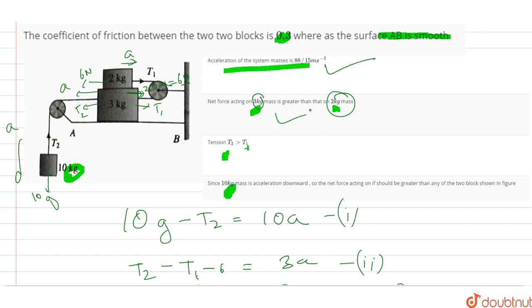I don't need to check that. Net force acting on 3kg is obviously 3a, which is greater than 2a for the 2kg mass.